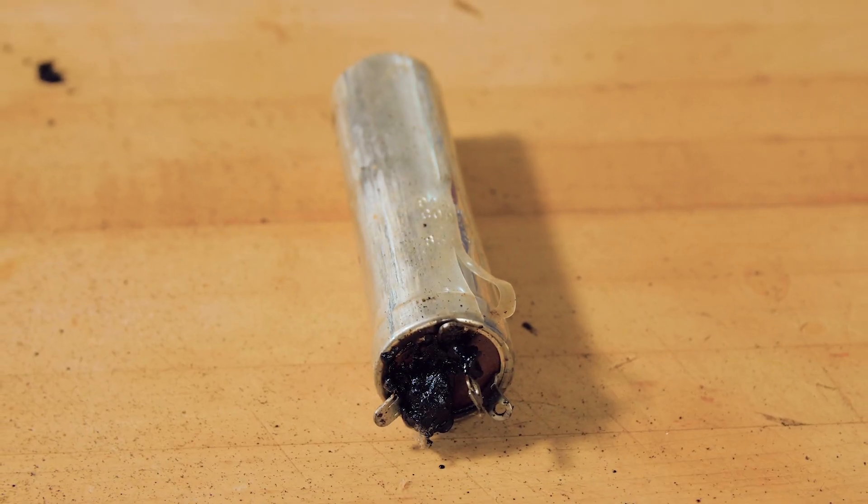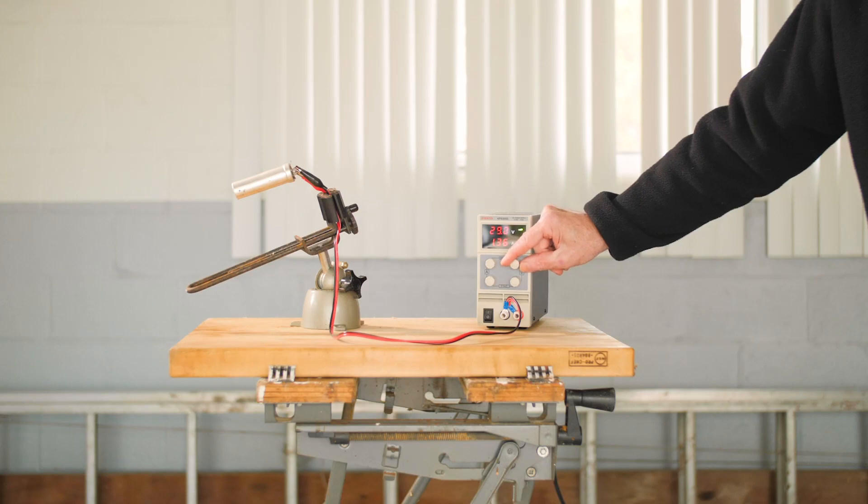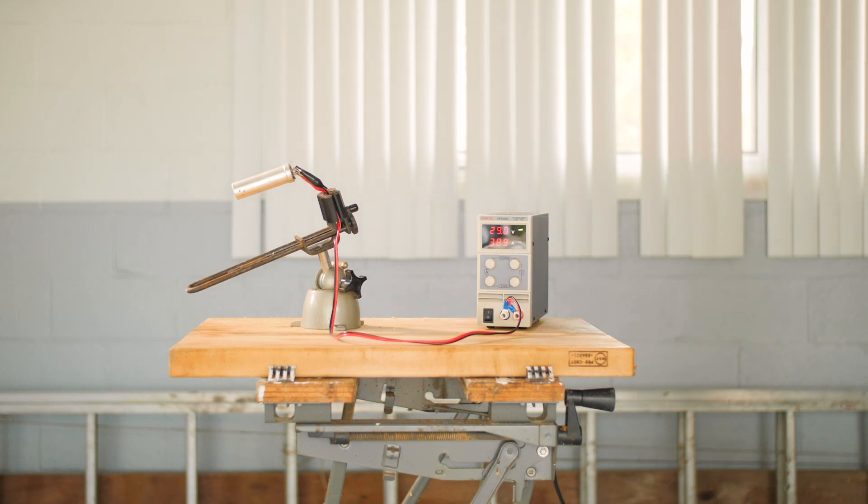Now we'll try the same stunt on an aluminum electrolytic that contains a solid electrolyte. The same basic thing happens. It doesn't take much voltage in the wrong direction to send the cap into catastrophic meltdown.